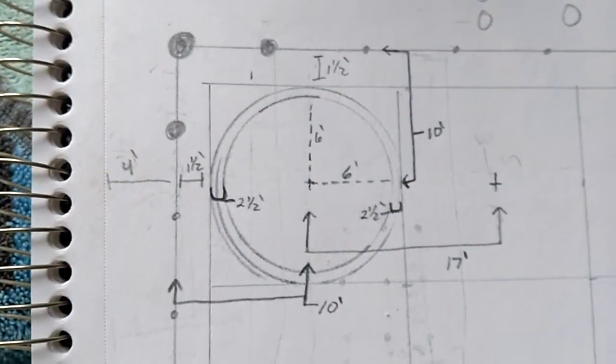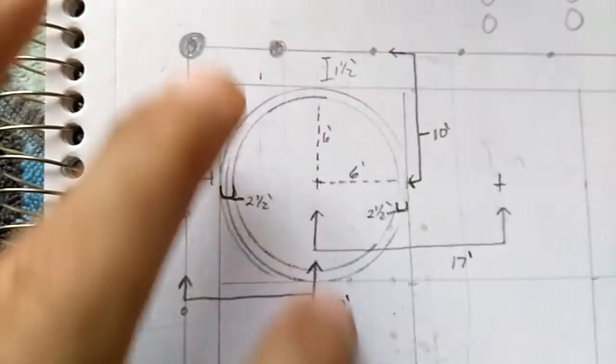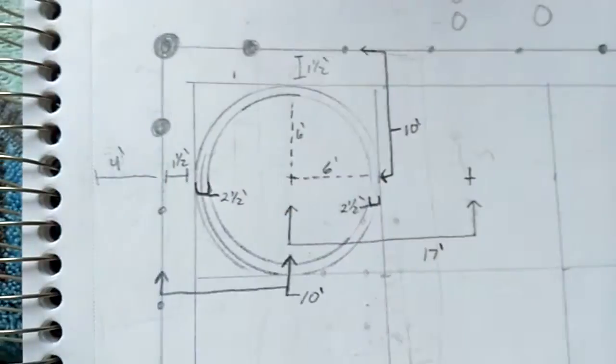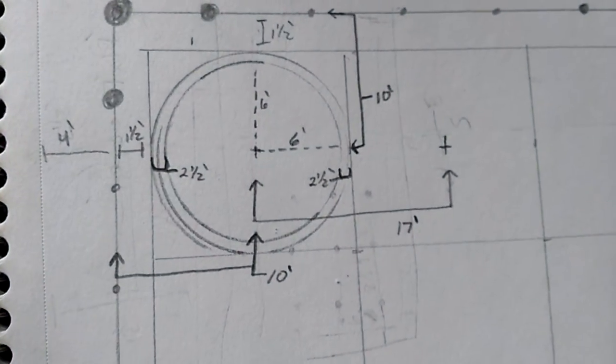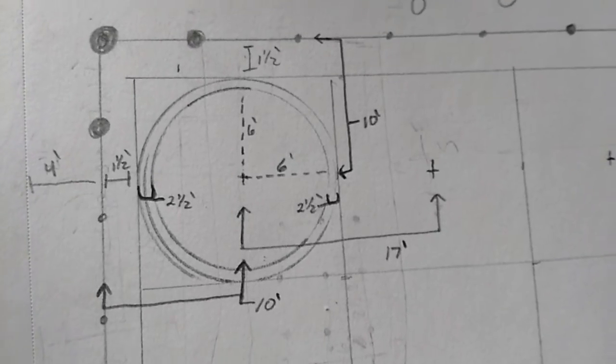Now your corner anchors and your anchors on your outside run this way and your outside line this way are going to determine the setup of your entire yard, so it's important that you get your measurements right or it'll throw it off.